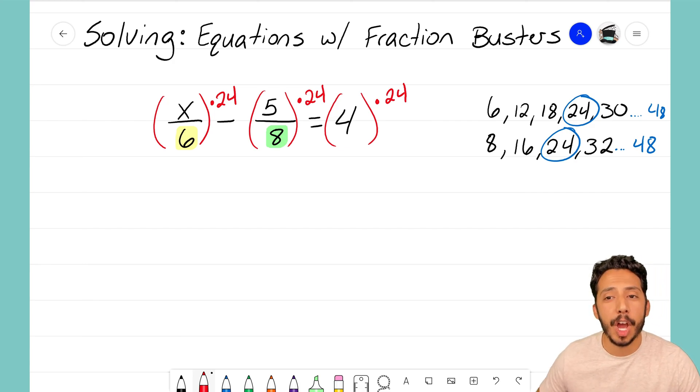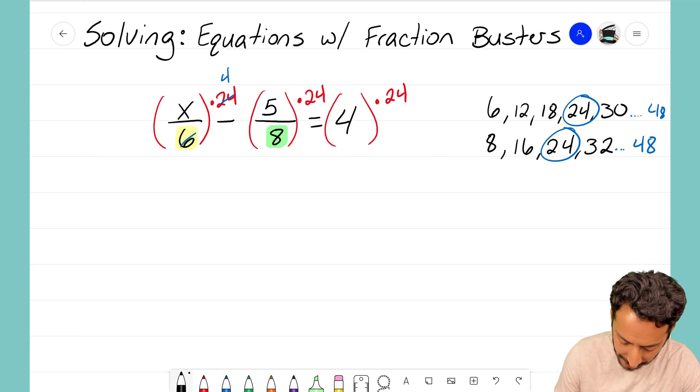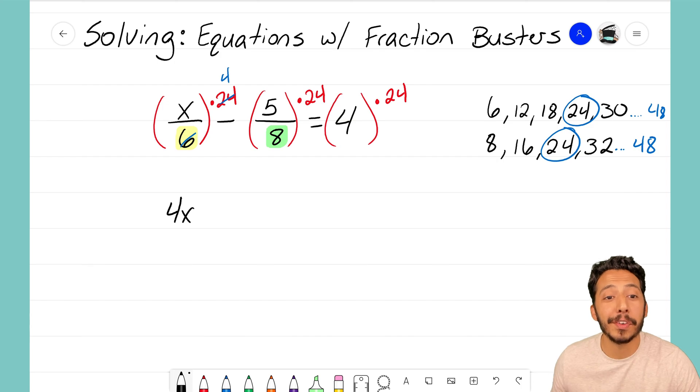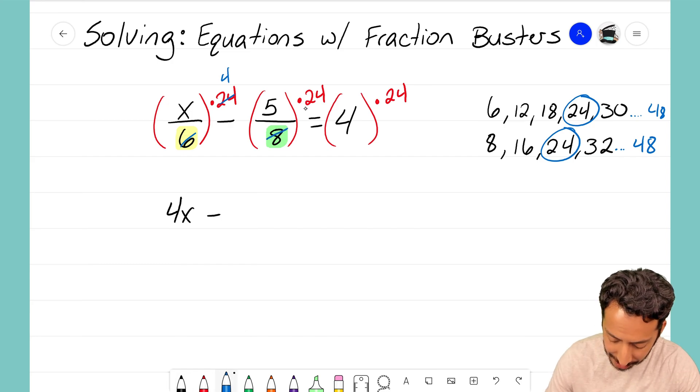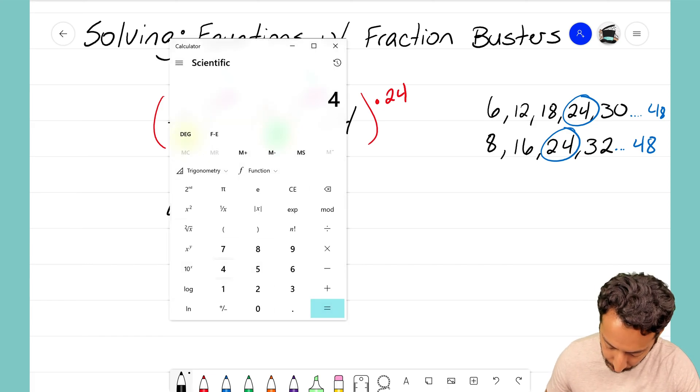And watch what happens—we're going to bust that fraction up. We're going to see no more fractions after we do this step. Let's jump into it: six goes into 24 I believe four times, x times four—that creates 4x. The fraction is gone, it's been busted up. We no longer have to worry with a fraction in that first term. We've got minus, we've got minus. Let's do the next one: eight goes into 24 three times, five times three—that's going to give us 15. Equals four times 24—I might have to break my calculator out